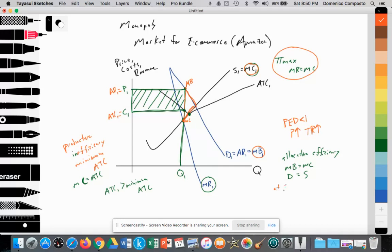So at Q1 we notice that the marginal benefit is greater than the marginal cost. So the monopolist is under-allocating. There's an under-allocation of resources to the production and consumption of the e-commerce goods and services that are desired by society.